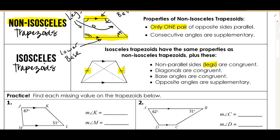Once we make the legs congruent, that makes the diagonals congruent — you can see those dotted lines, they're going to be congruent. We also make the base angles congruent. So I have my lower base angles congruent, and these are my upper base angles — the upper base angles are congruent and the lower base angles are congruent.